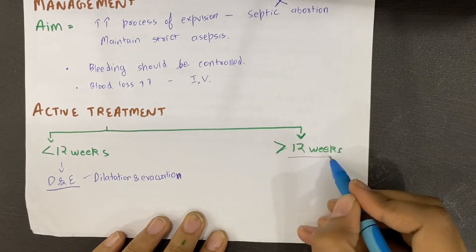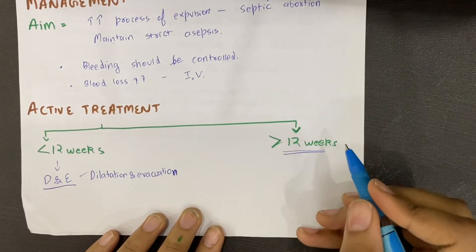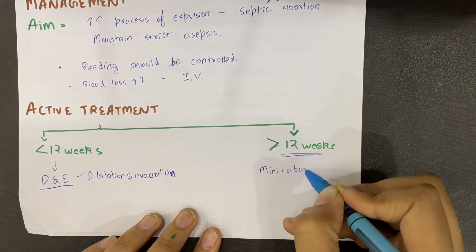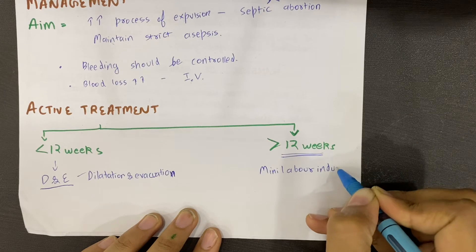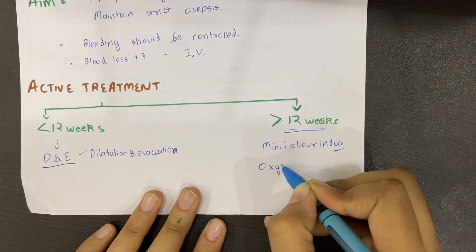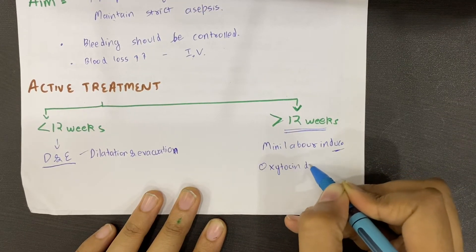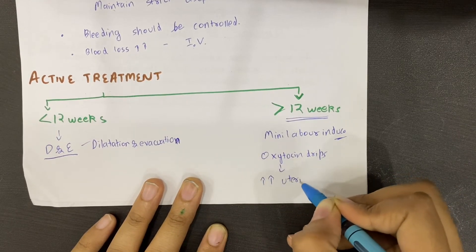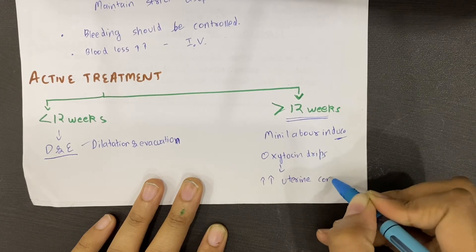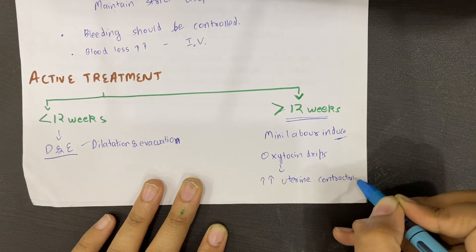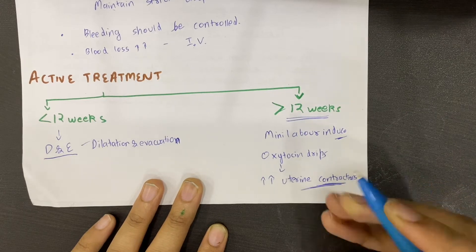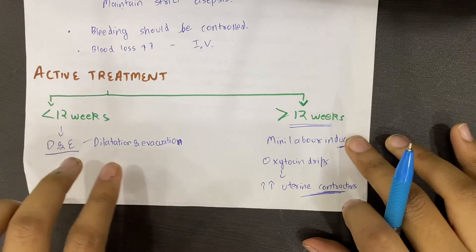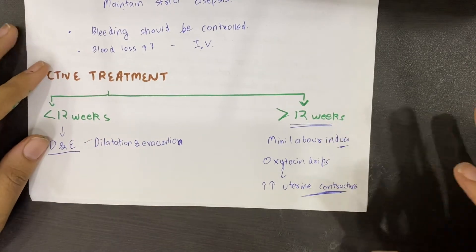If this condition is after 12 weeks, then we induce mini labor. Mini labor is induced generally using an oxytocin drip. Oxytocin increases uterine contractions, which produces mini labor, and the material is expelled. After this, if the doctor feels that D&C is needed for cleaning purposes, then it is possible.